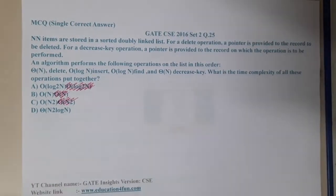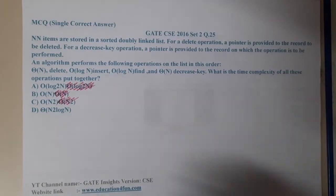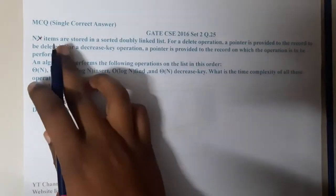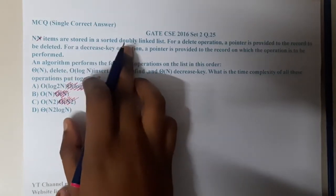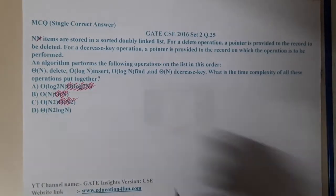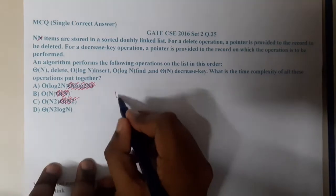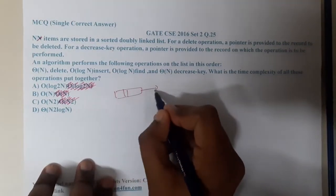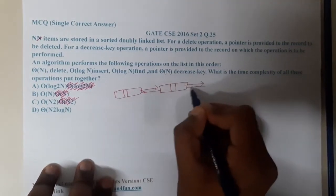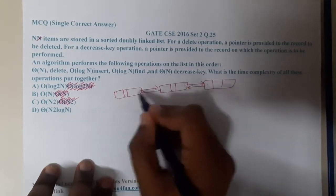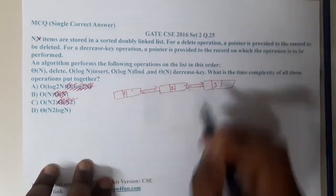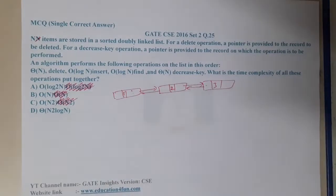Now let us start understanding the question. So n items are stored in a sorted doubly linked list. They are being very clear here — it is sorted and it is a doubly linked list. This is the first question we are facing with respect to a doubly linked list. It is sorted 1, 2, 3, but they did not say whether it is ascending or descending order.